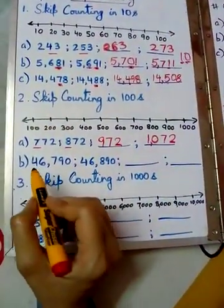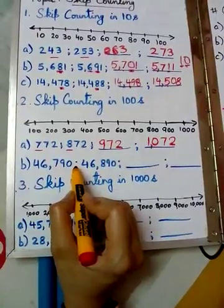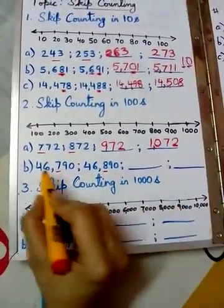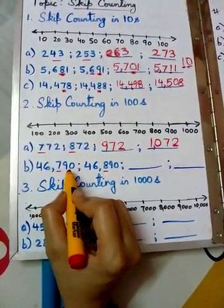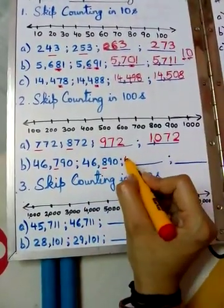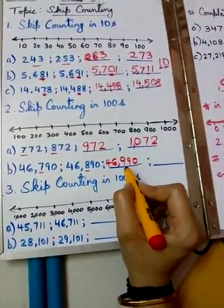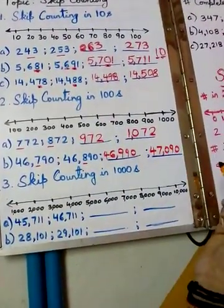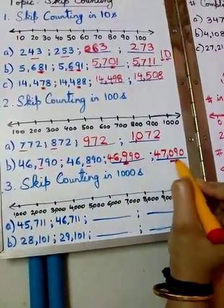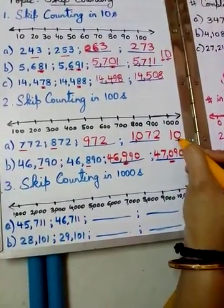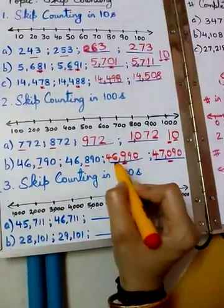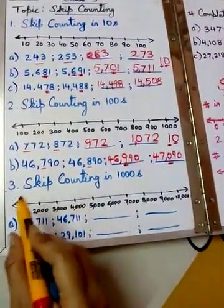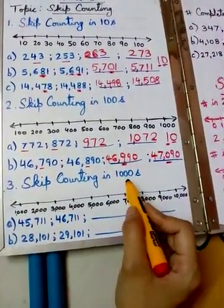Now look at 46,790. Which place is going to change? The hundreds place, because this is skip counting in hundreds. The rest of the digits stay the same. So: 46,790, 46,890, 46,990. What comes after 9? 10. So we put 0 and carry 1 to the next place. The next digit is 6, and 6 plus 1 is 7. So the answer is 47,090.